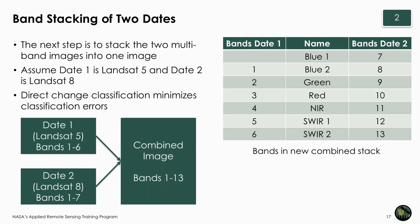The next step is to take the two cloud-masked images and generate a stacked two-date multi-band image. In the hands-on exercise, this includes taking the Date 1 image — a Landsat 5 image with six bands (bands 1–6) — and the Date 2 image — a Landsat 8 image with seven bands (1–7) — and stacking them into a combined image with all the bands. We now have a new 13-band image in which bands 1–6 are Landsat 5 and bands 7–13 are Landsat 8.